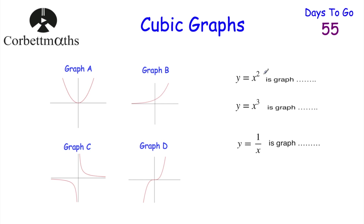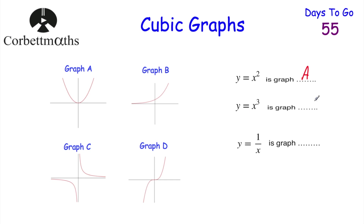The first one is y equals x squared, the quadratic graph. Remember, if it's a positive quadratic — just x squared — it would be a u-shaped parabola. Looking at our graphs, the u-shaped parabola is graph A, so graph A is y equals x squared. If it were y equals minus x squared it would be n-shaped, but because it's x squared it's u-shaped. Next, y equals x cubed — the cubic graph. Because 1 cubed is 1, 2 cubed is 8, 3 cubed is 27, it gets very steep very quickly. And negative 1 cubed is negative 1, negative 2 cubed is negative 8, and so on. So graph D is y equals x cubed.